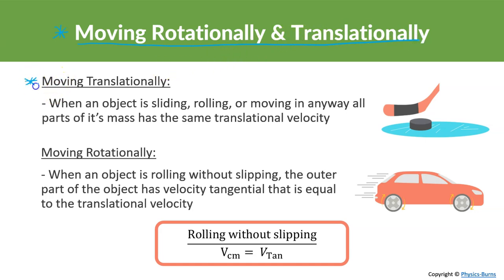Moving translationally is when an object is sliding, rolling, or moving in any way where all parts of its mass have the same translational velocity. Moving rotationally — when an object is rolling without slipping — the outer part of the object has a tangential velocity equal to the translational velocity.